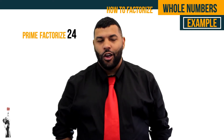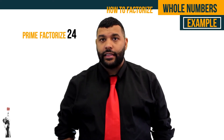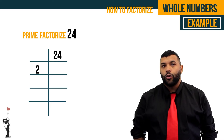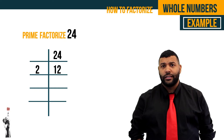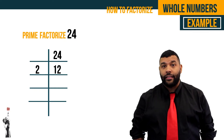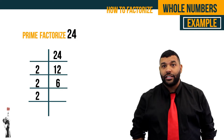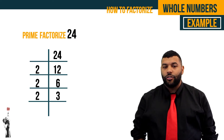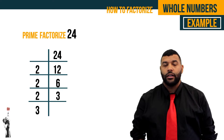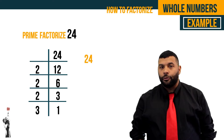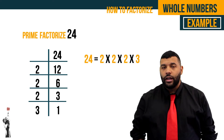Let's do an example. Let us prime factorize 24. We take the number 24 and place it in a ladder. Then we divide it by the smallest prime number, which is 2. 24 divided by 2 gives us 12. We take 12 and divide by 2 to give us 6. We divide 6 by 2 to give us 3. 3 cannot divide by 2, so we move on to the next prime number, 3. 3 divided by 3 gives us 1. So 24 breaks down to 2 times 2 times 2 times 3.